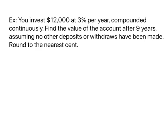Let's do an example. You invest $12,000 at 3% per year, compounded continuously. Find the value of the account after 9 years, assuming no other deposits or withdrawals have been made. Round to the nearest cent.